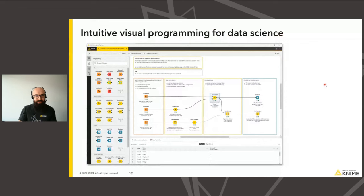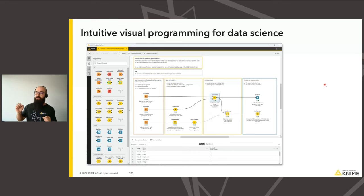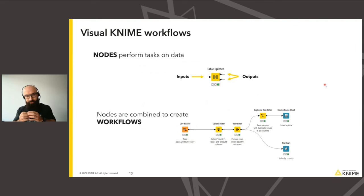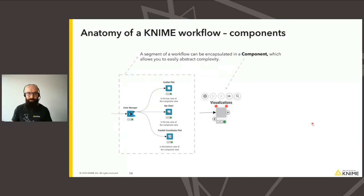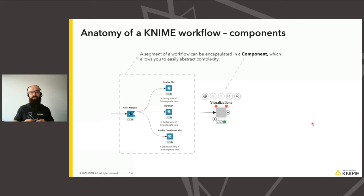The KNIME analytics platform is an open source platform for data science where you don't have to code. Instead, you just drag your data into a workflow and connect it to multiple so-called nodes that do the data processing step by step. You can follow in a very intuitive way where the data goes inside the workflow. The essential building blocks of a workflow are the KNIME nodes, which typically have an input where data comes in and outputs where data goes out to downstream nodes. Combining multiple nodes gives you a workflow, and these workflows can get rather big.